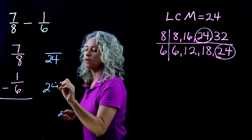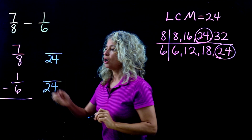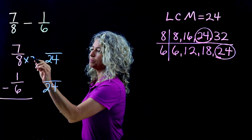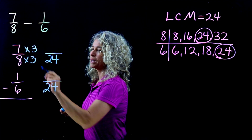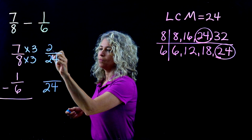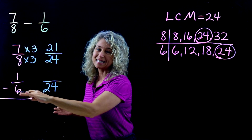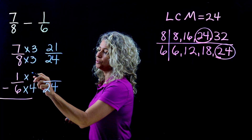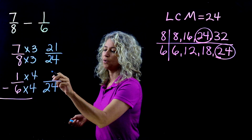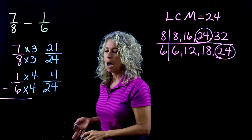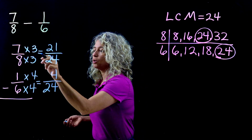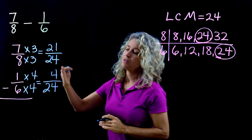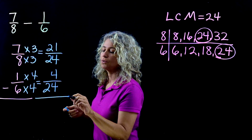Let's rewrite the fractions using the LCM of 24 and make equivalent fractions. How do you get from an 8 to a 24? Times 3 — so multiply by 3: 7 times 3 is 21. How do you get from a 6 to a 24? Times 4 — so do the same to the numerator: 1 times 4 is 4. So 7/8 means the same as 21/24, and 1/6 means the same as 4/24.